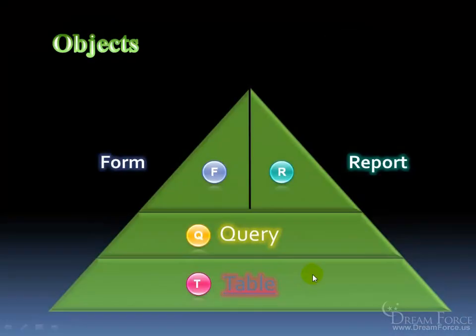Access has what are called objects. The foundation of all the objects are tables, because without a table of data, you don't have a database. We've got to have some data, and to store the data we create a table and break the data down into its smallest, most meaningful parts. For example, a table based upon employees — we want to keep track of all our employees in a separate table, and keep track of all clients in another table.